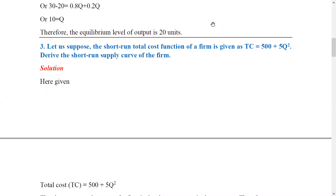Question number three: let us suppose the short-run total cost function of the firm is given as TC = 500 + 5Q². This is the short-run total cost function of the firm. To find the short-run supply curve, we first need to find the marginal cost, and then identify the minimum variable cost and short-run marginal cost.